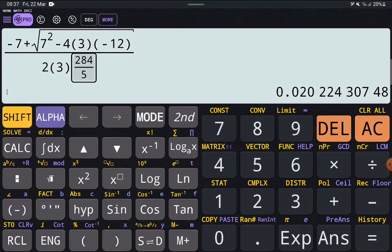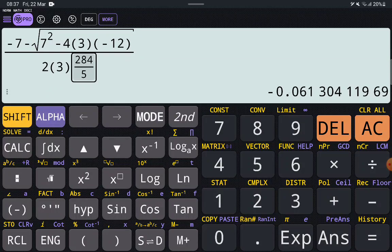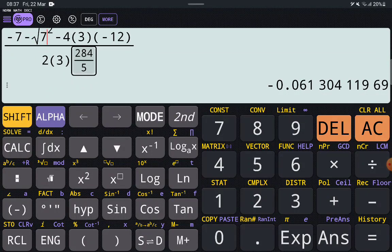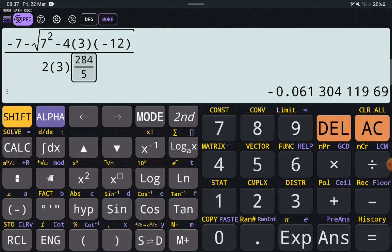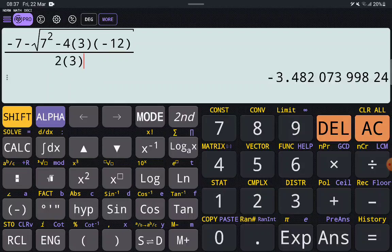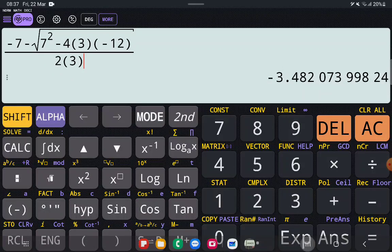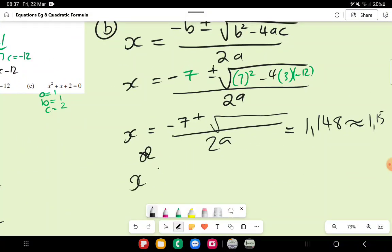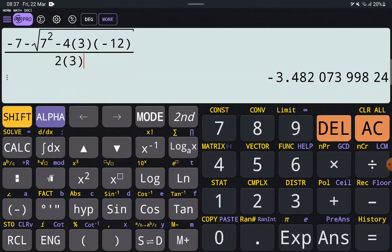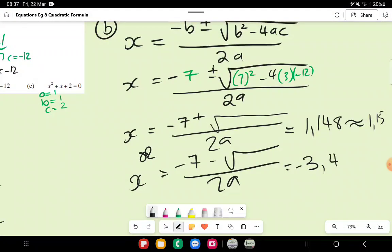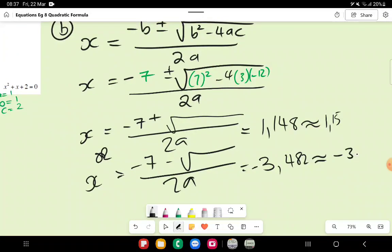If we do the subtraction, so instead of adding them, we do subtraction. Negative 3.482. So let's put that in there. Or, remember we need two values of x. Negative 7 minus the square root over 2a is equal to negative 3.482, which is approximately negative 3.48. And those are our two values rounded off to two decimal places.